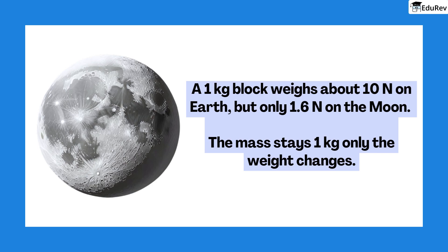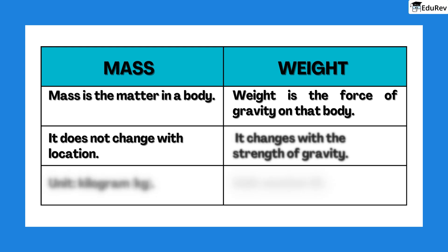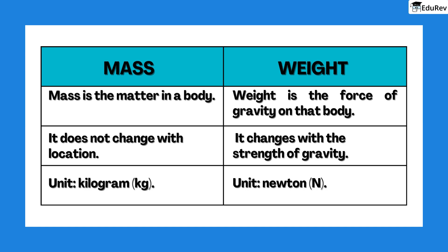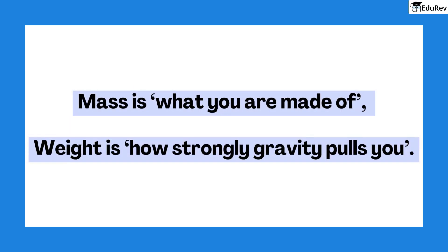To make it clear, let's compare the two. Mass is the matter in a body. It does not change with location. Unit: kilogram, kg. Weight is the force of gravity on that body. It changes with the strength of gravity. Unit: Newton, N. In short, mass is what you are made of. Weight is how strongly gravity pulls you.